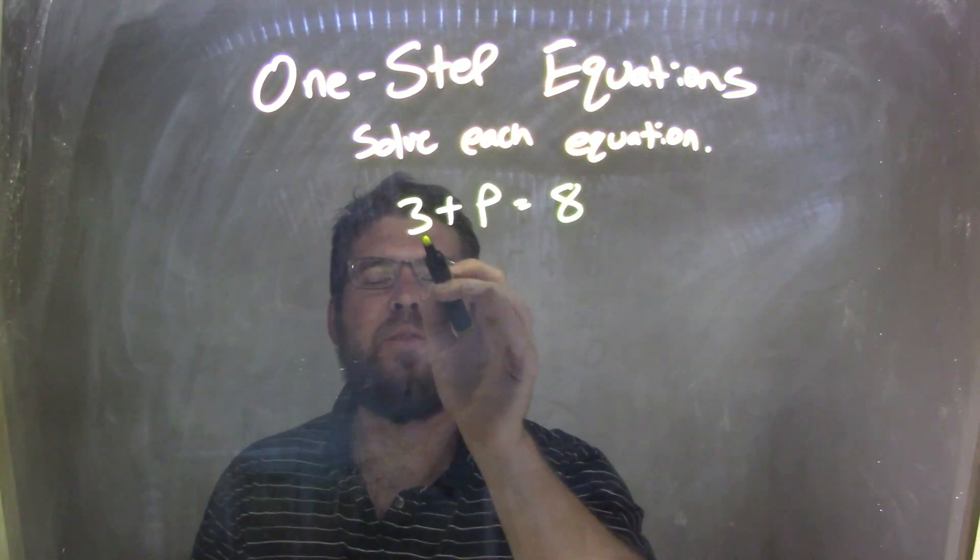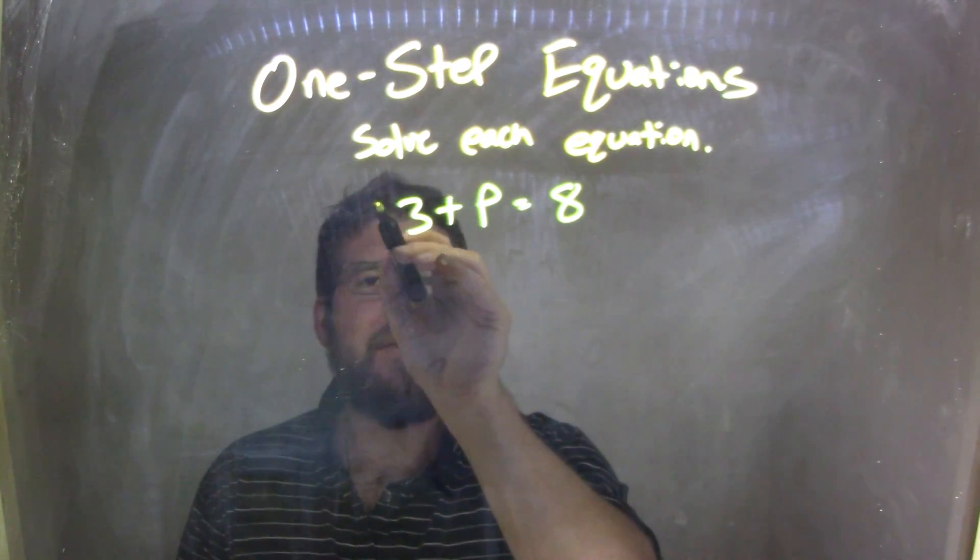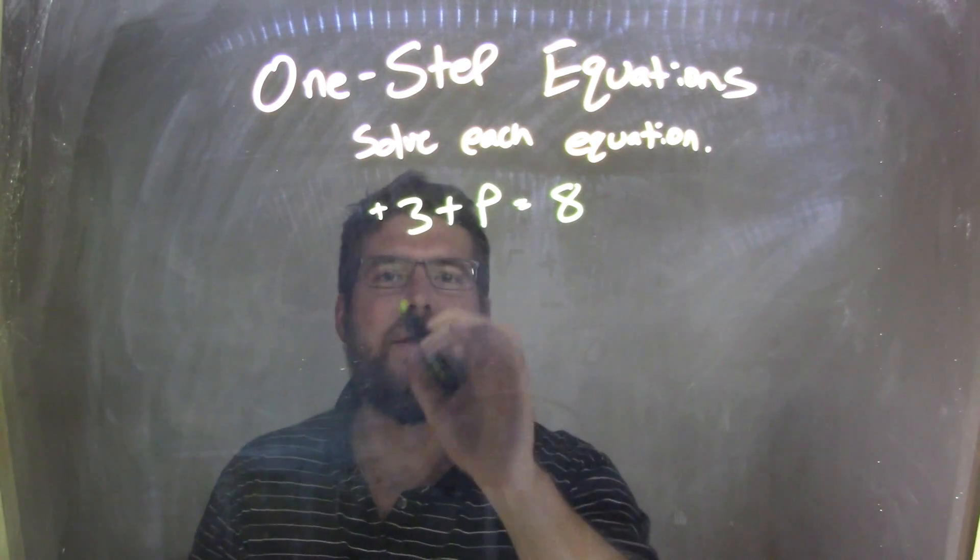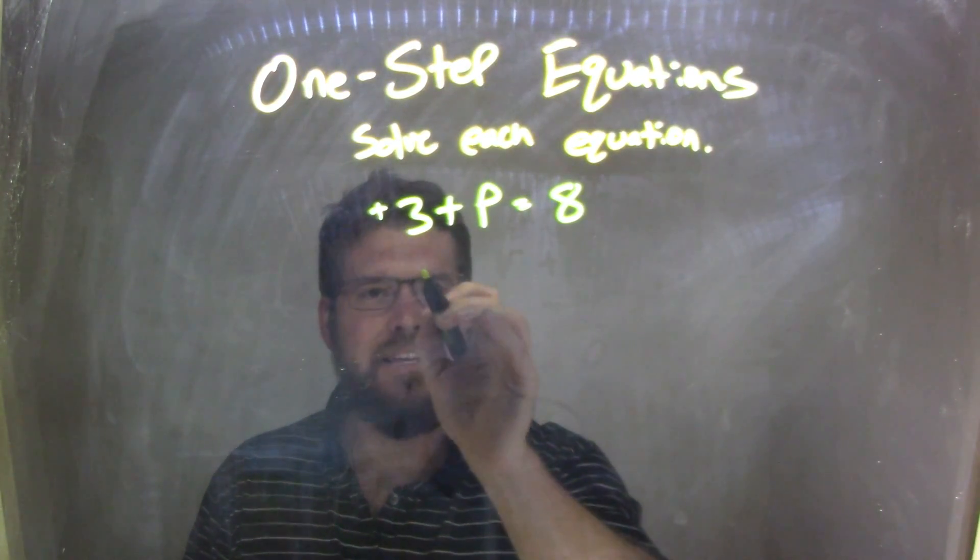I see that there is a 3 here, a plus 3. That 3 is a positive 3, so what's important here is I want to subtract a 3 to both sides, opposite of that addition.